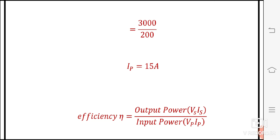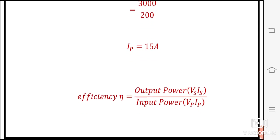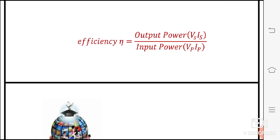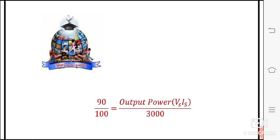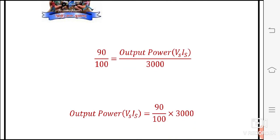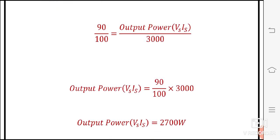Efficiency is defined as output power divided by input power. Output power is the product of secondary voltage and secondary current, and input power is the product of primary voltage and primary current. Input power is given as 3000 watts, and efficiency is 90%. So: 90 divided by 100 equals output power VS × IS divided by 3000. From this, output power is equal to 90 by 100 into 3000, which gives output power equal to 2700 watts.